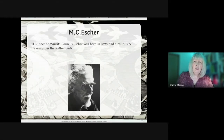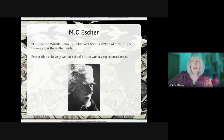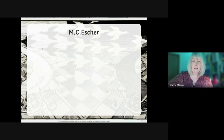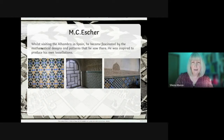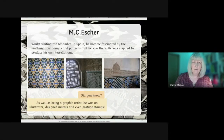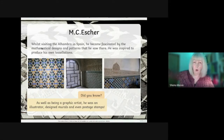So who was Escher? He was Dutch — born over 200 years ago — and when he was in school, he didn't do very well, but he was a very talented artist. When he was younger, he visited Spain and was absolutely inspired by beautiful mathematical designs and patterns, and he wanted to produce his own tessellations. As well as being a graphic artist, he was an illustrator, he designed murals — paintings that go on big walls — and he even designed postage stamps.